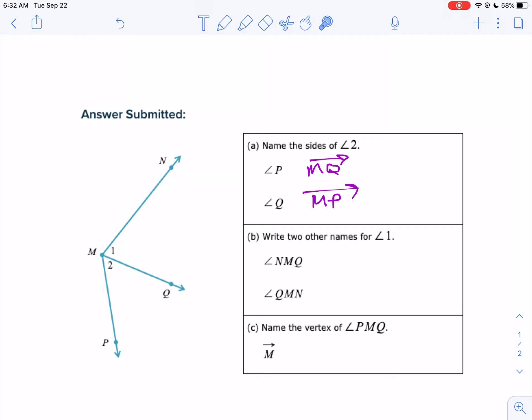When you name the vertex of PMQ, you did name this correctly M, but no ray. Get rid of that ray. A vertex is a point, and we name a point with a capital letter, and that's it.